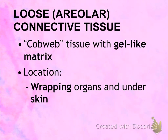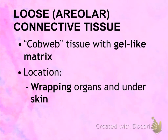The first type of connective tissue is loose connective tissue, also called areolar. It has a spiderweb appearance and a gel-like matrix. The matrix is the extracellular matrix, which is made up of fibers and ground substance, and it is the non-cellular portion of the tissue.